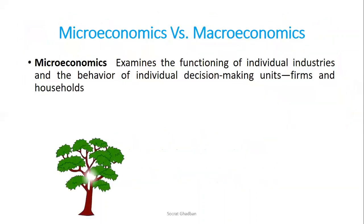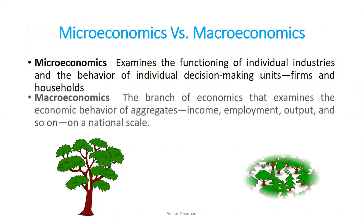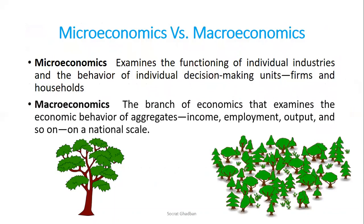It's good to remind you of the difference between microeconomics and macroeconomics. Microeconomics examines the functioning of individual industries and the behavior of individual decision-making units — firms and households. However, macroeconomics is the branch of economics that examines the economic behavior of aggregates: income, employment, output, and so on, on a national scale.